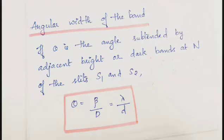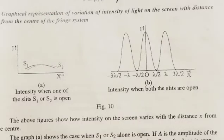The formula is beta = D·lambda/d. The angular width of the band is beta/D, which equals lambda/d. This is the angular width of the fringe pattern.